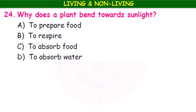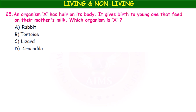Why does a plant bend towards sunlight — to prepare food, to respire, to absorb water, or to absorb food? It is to prepare food, as light is the requirement for photosynthesis. Next, organism X has hair on its body and gives birth to young ones that feed on their mother's milk. Which organism is X — rabbit, tortoise, lizard, or crocodile? Tortoise, lizard, and crocodile are reptiles that reproduce by laying eggs (oviparous). The rabbit is viviparous — it gives birth to young ones and feeds them with milk.